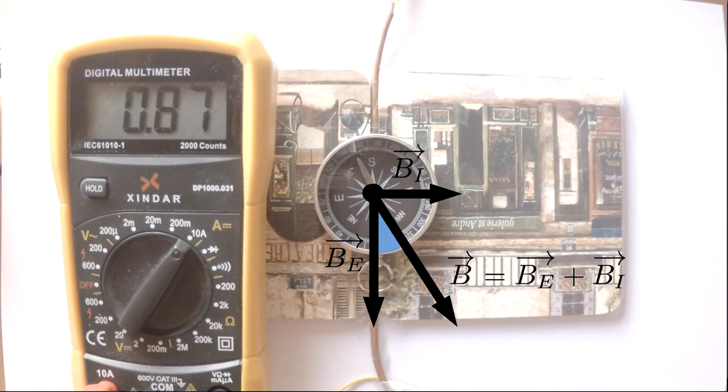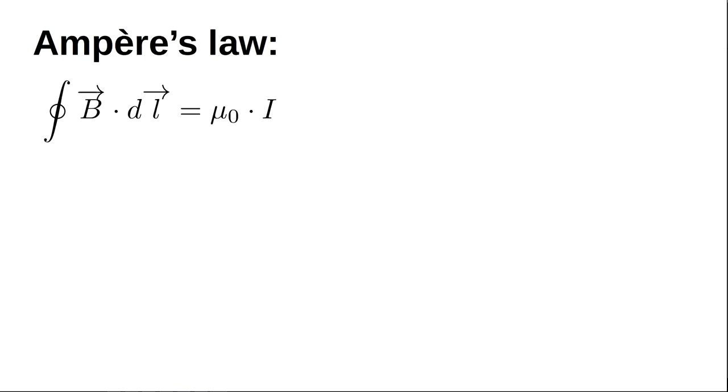That's why the compass needle aligns with this magnetic field. To compute the amplitude of the induced magnetic field in the case of an infinite straight current carrying wire, we use Ampere's law.